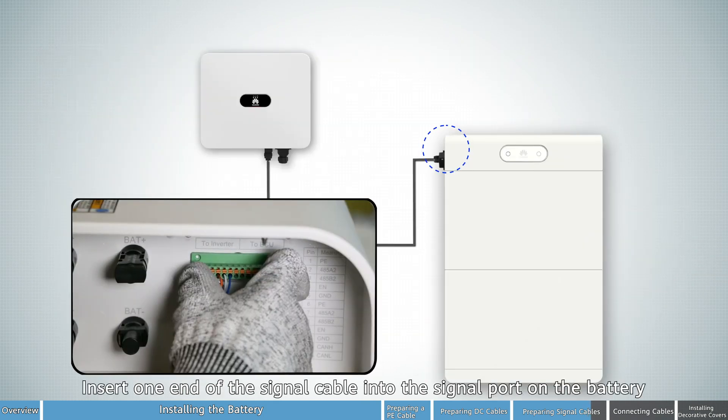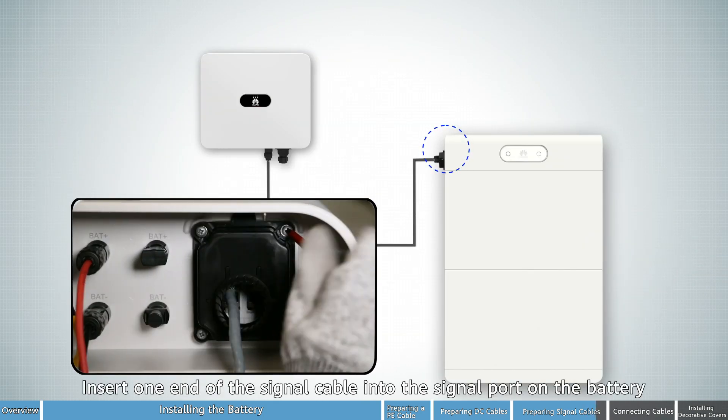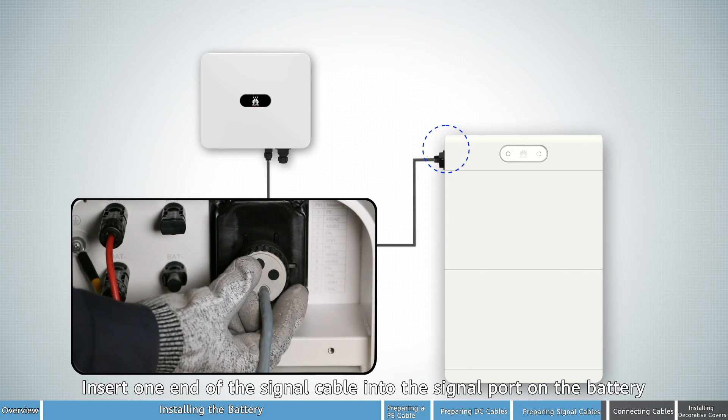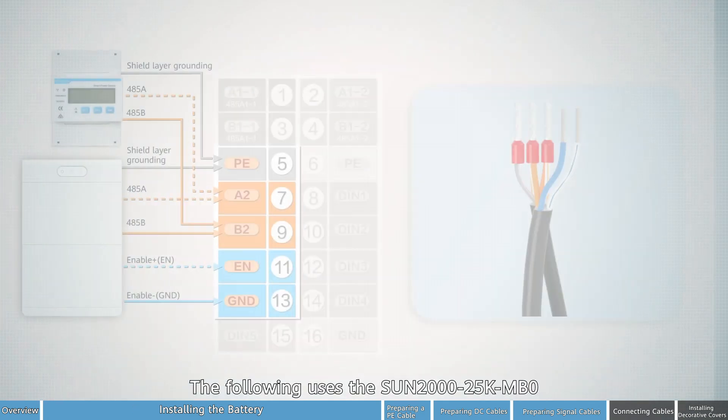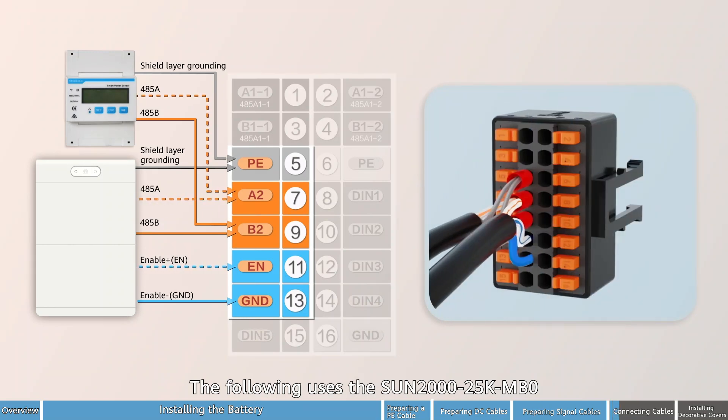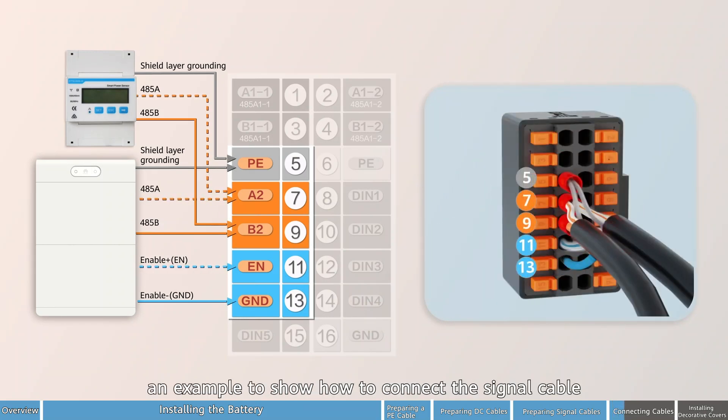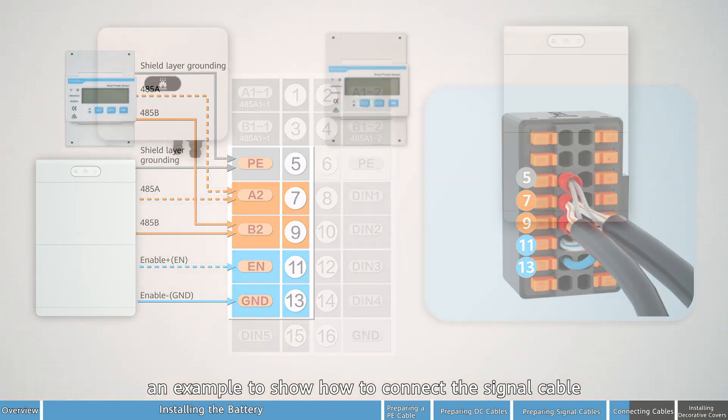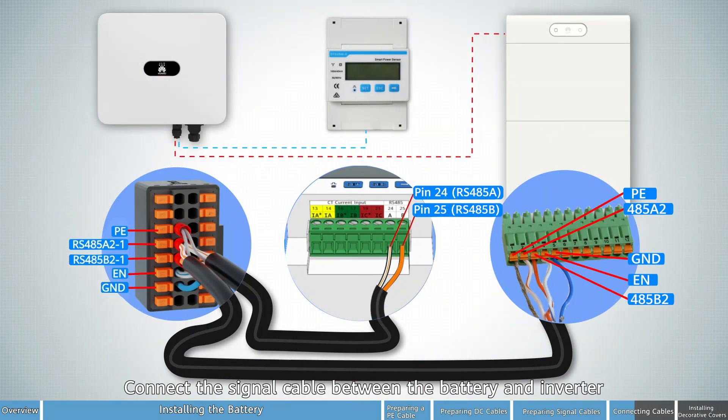Insert one end of the signal cable into the signal port on the battery. The following uses the Sun 2025K MB0 as an example to show how to connect the signal cable. Connect the signal cable between the battery and inverter.